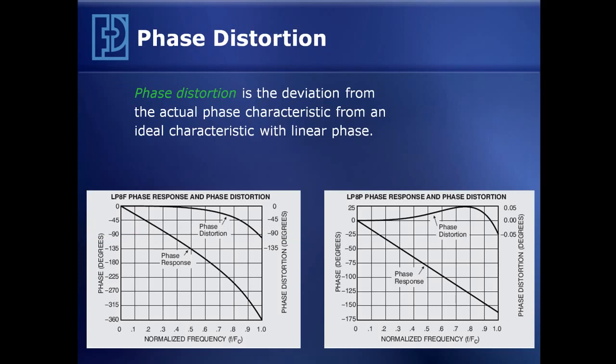Phase distortion is the deviation of the actual phase versus frequency curve compared to an ideal linear phase characteristic. The phase distortion of the elliptic flat mode filter grows from minimal at low frequency to about 100 degrees at the cutoff frequency. In contrast, the pulse mode LP8P has linear phase, and its phase distortion is less than 0.05 degrees across the passband — excellent phase linearity for the pulse mode characteristic.